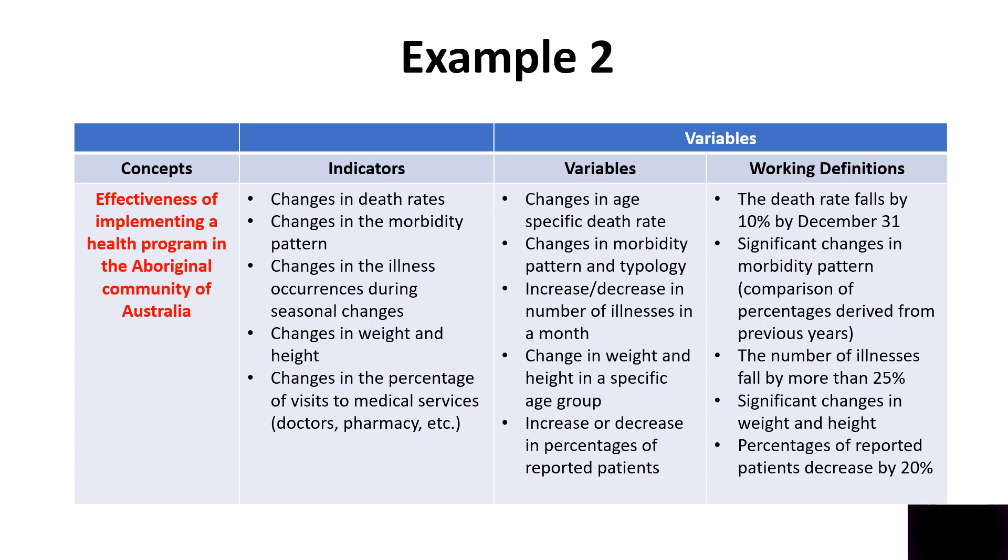Similarly, I would like to see changes in the morbidity pattern, the type of the morbidity pattern. If I start comparing percentages derived from previous years or previous medical reports and I see a change in the percentages after the health program has been implemented, that shows a significant change. It could be either supporting your hypothesis or it could be not supporting your hypothesis. But at the end of the day, you are getting a result out of the research that you are doing. For example, the increase or decrease in the number of illnesses in a month, changes in the weight and height in a specific age group, increase or decrease in percentage of reported patients. All that will give me an indication, especially if I measure it with respect to the previous years. Then you can get a measurable indication of how effective the health program was after it was implemented.